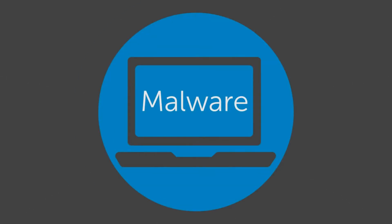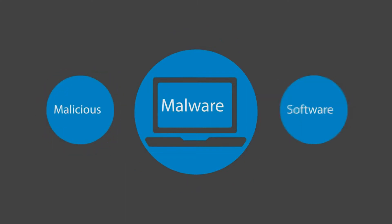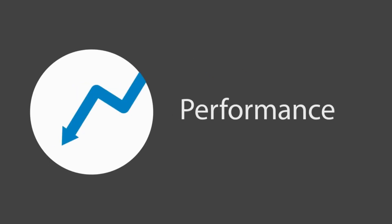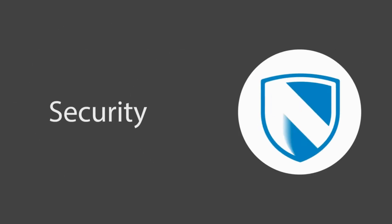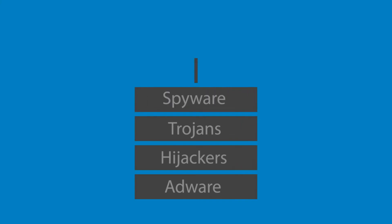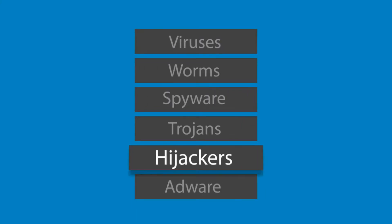Malware, known as malicious software, is a malicious code designed to function in ways that harm the user. The main signs that a computer might be infected by malware are slowing down the device, changing your homepage, or redirecting it to other web pages.